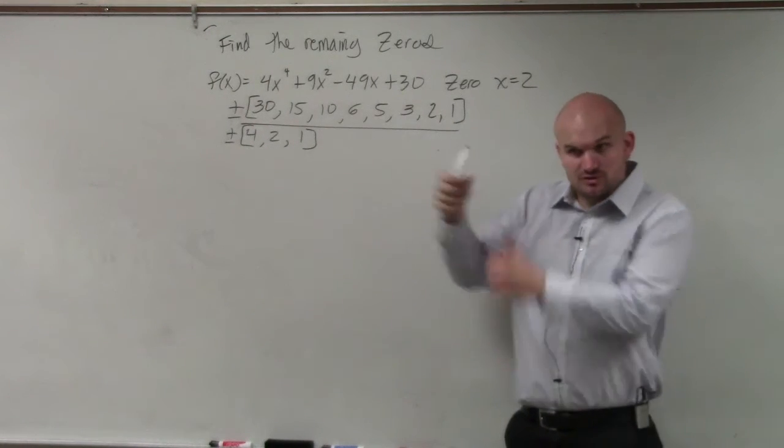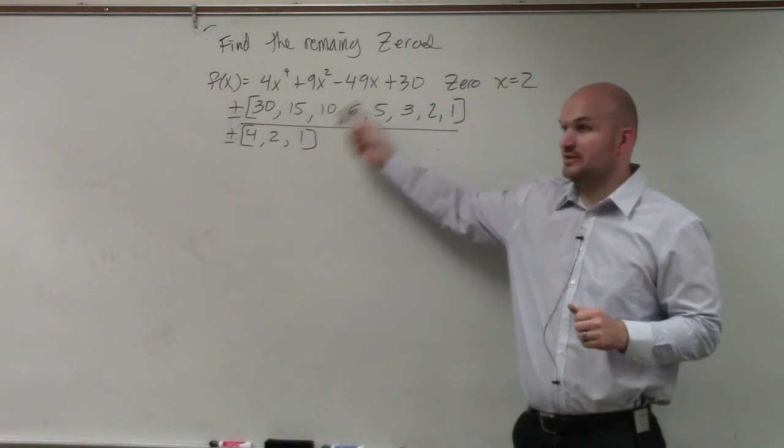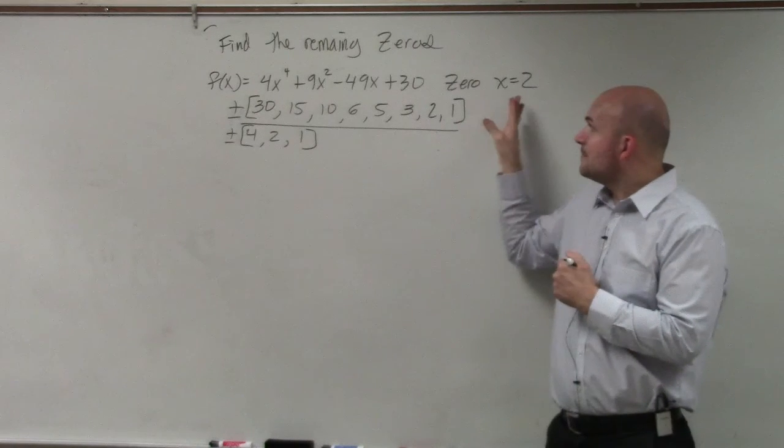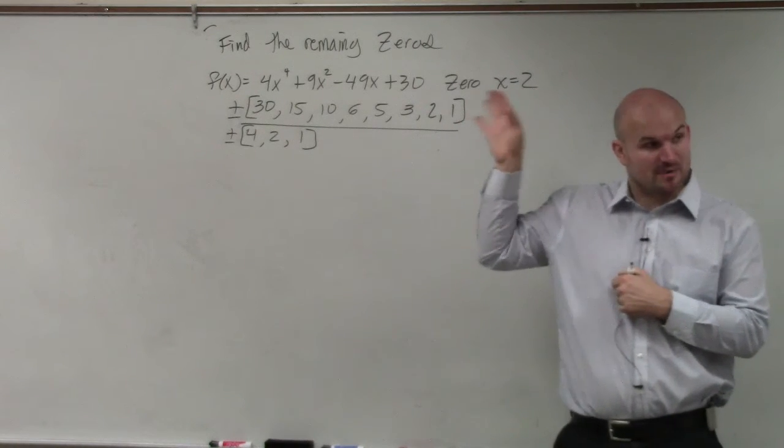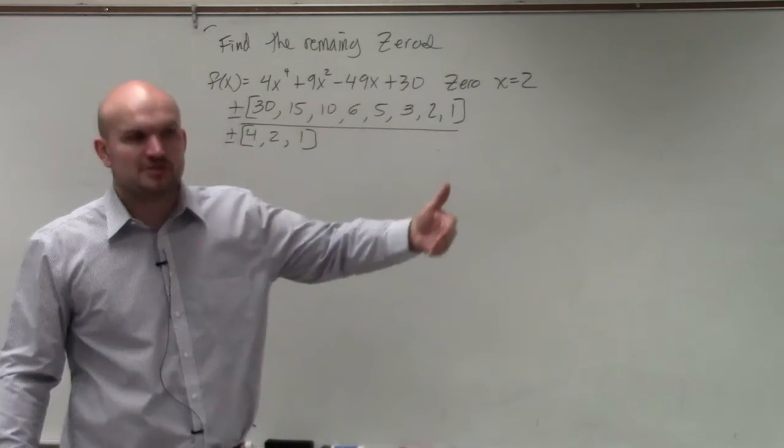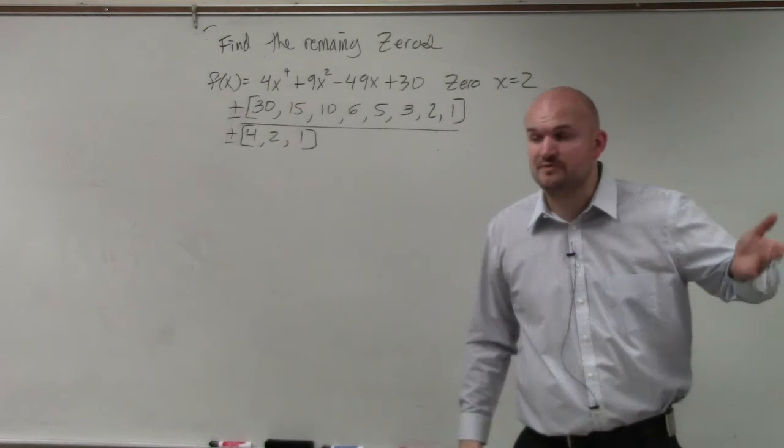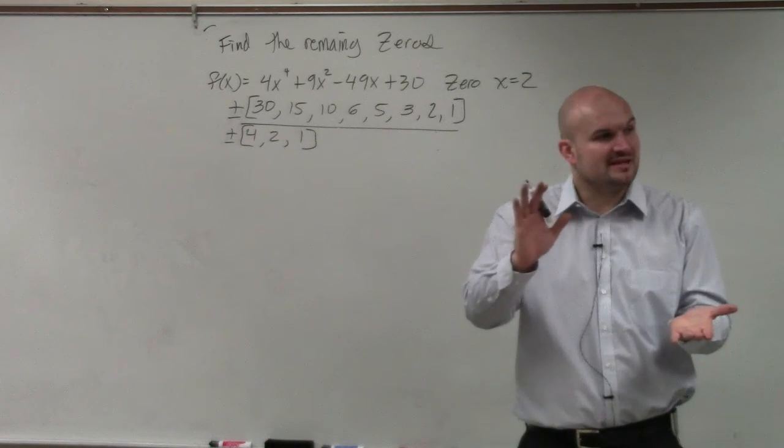So, 2 is in our rational zeros. 2 over 1, that's a rational zero. So, therefore, 2 is in our rational zero list test. Now, we want to find the rest of the rational zeros. So, we want to find the rest of the zeros. We don't know if they're rational or not. So, we need to find the other factors.